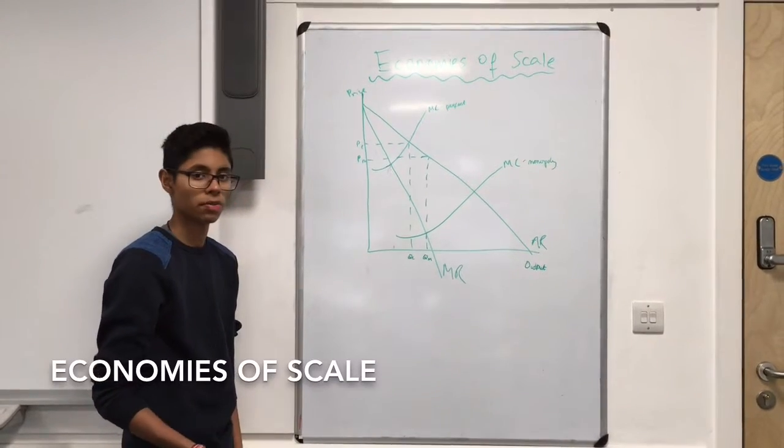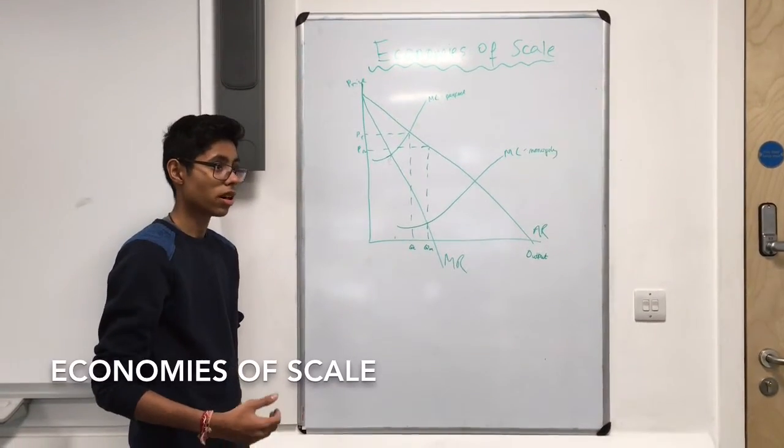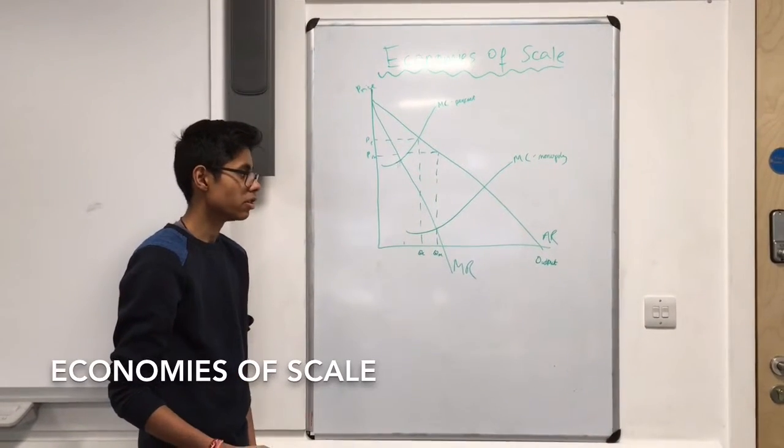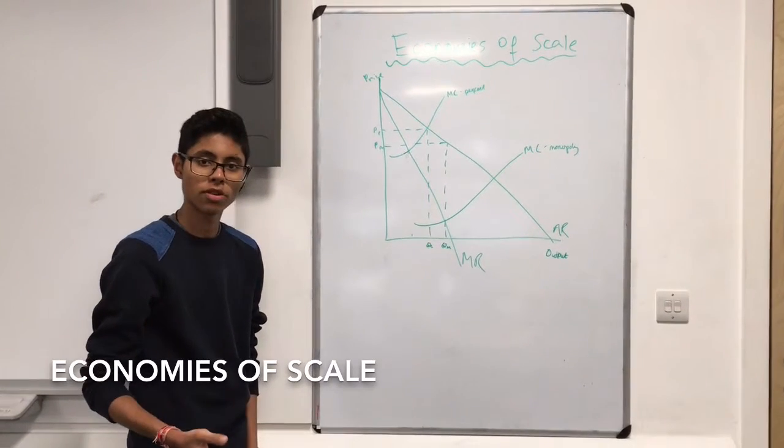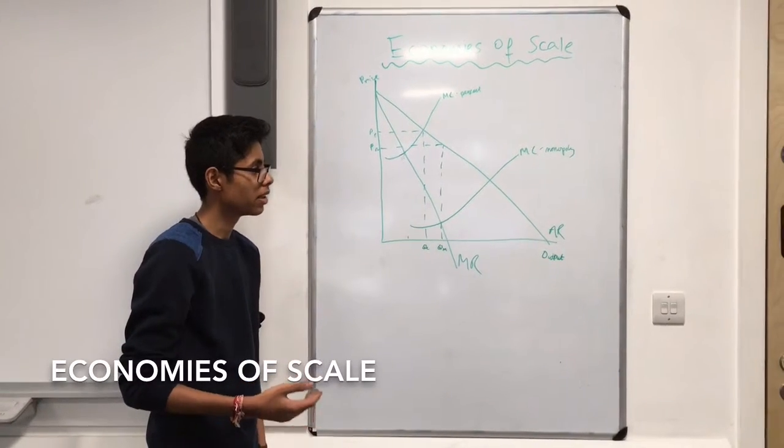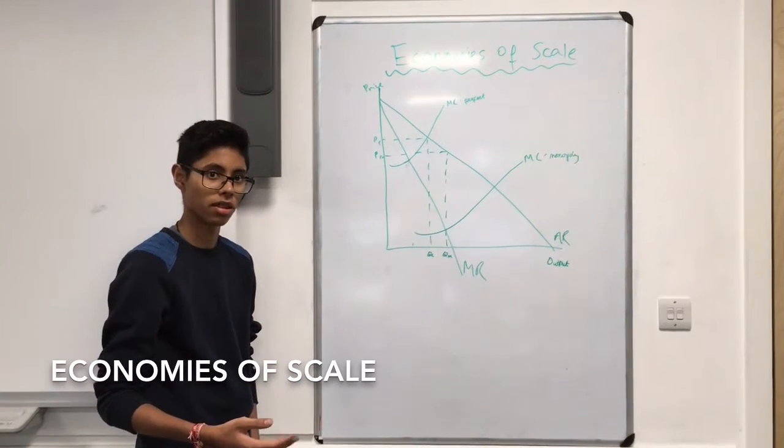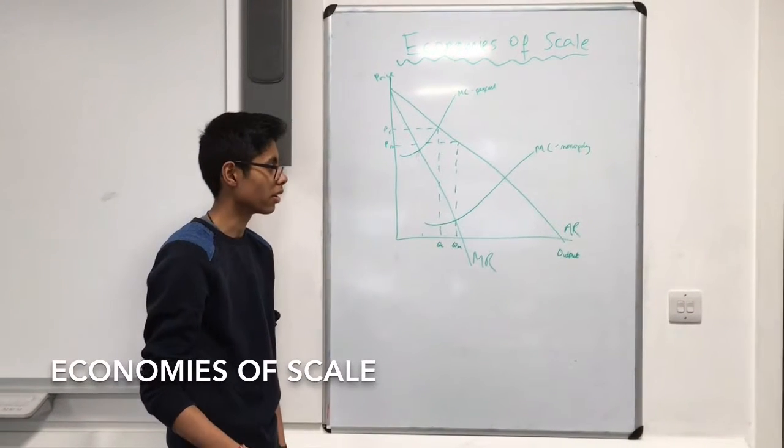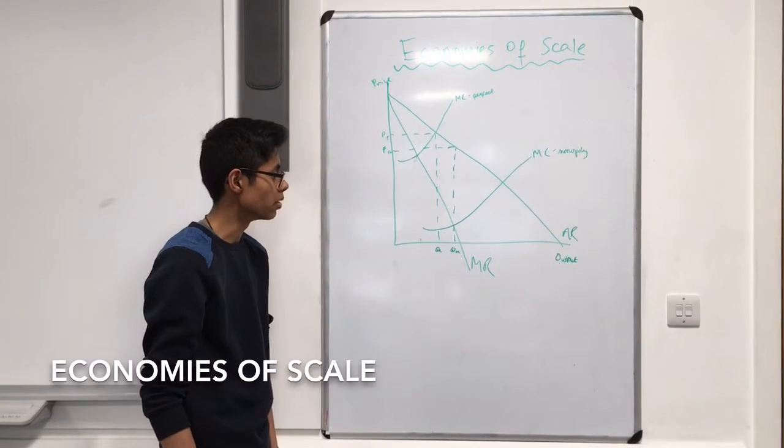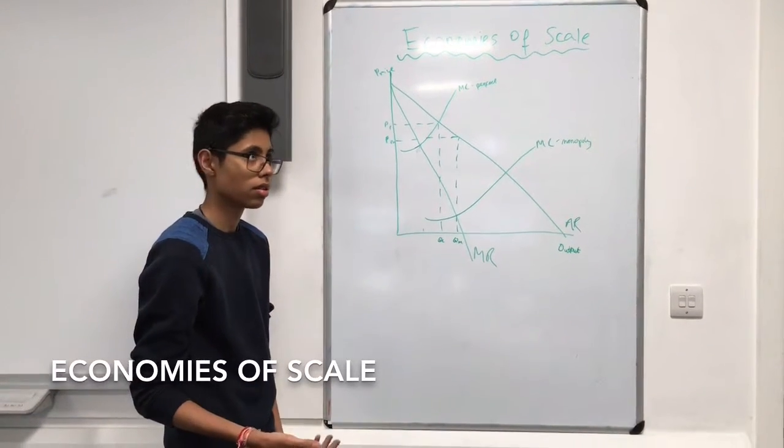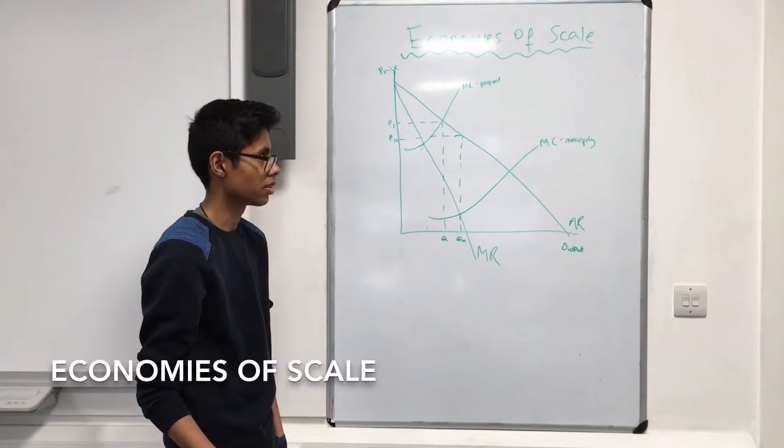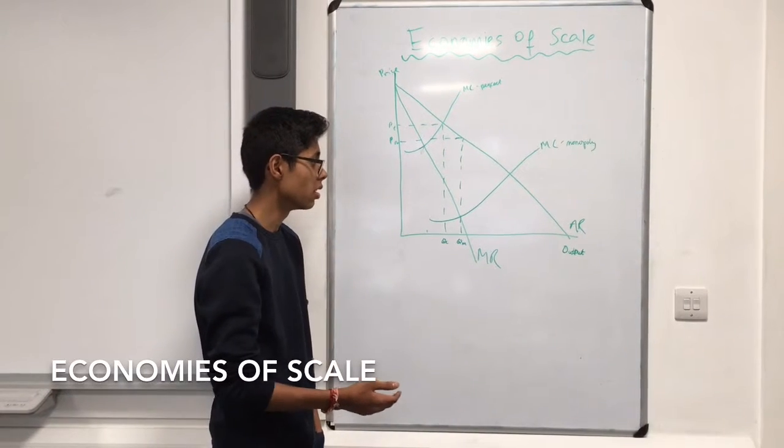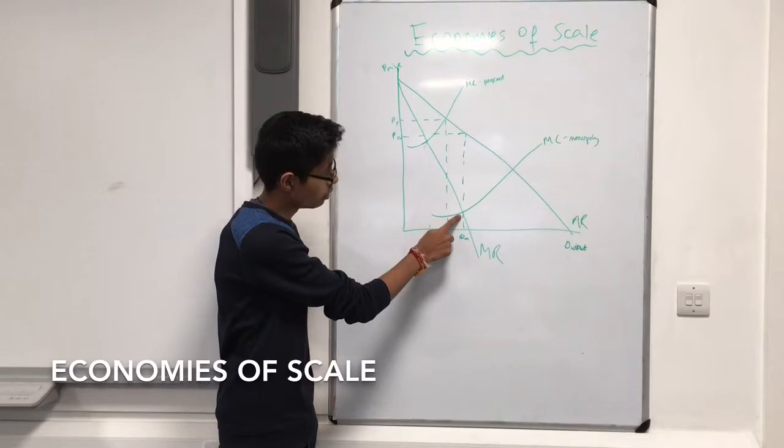A benefit of monopolies is economies of scale. Due to the higher scale of production, monopolies can lead to lower prices for consumers. An example is purchasing power. When a monopoly buys raw materials, the price can be negotiated down through bulk buying and reflected to consumers. This can often be cheaper than what perfect competition markets offer, as they are price takers within their market, whereas monopolies are price makers and can reduce prices as shown where MC equals MR, while perfectly competitive firms must produce at MC equals AR.